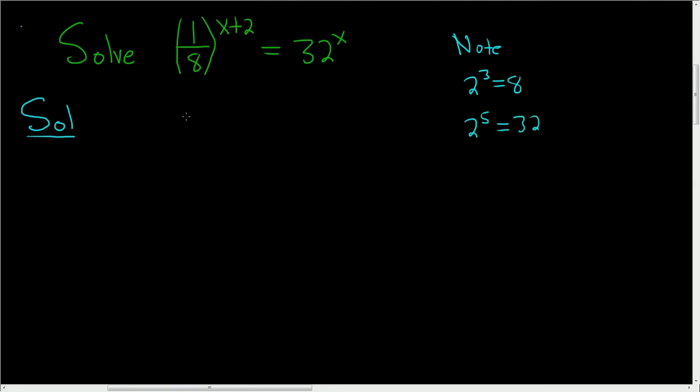So on the left-hand side, we can rewrite it as 1 over 2 cubed to the x plus 2. And on the right-hand side, we can write 32 as 2 to the 5th power, and then we still have the x here.